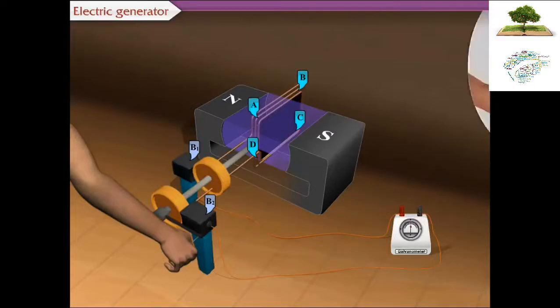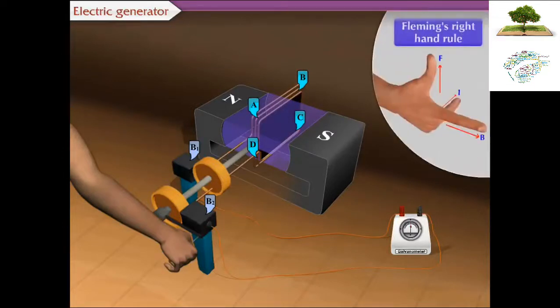According to Fleming's right-hand rule, electric current is produced in the branches AB and CD in the direction A to B and C to D. Thus, the current flows in the direction ABCD. In the external circuit, the current flows from B2 to B1 through the galvanometer. Thus, the galvanometer shows deflection on one side.